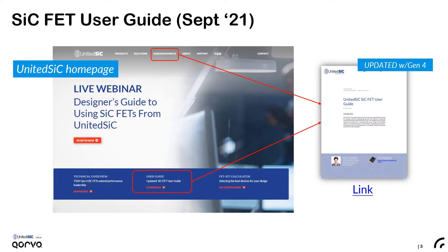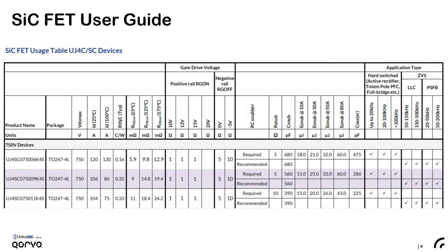The FET user guide can be found right on our homepage or under design resources. A link is provided here as well. In the user guide, you will find a comprehensive table. Here I will briefly explain how this table is laid out.